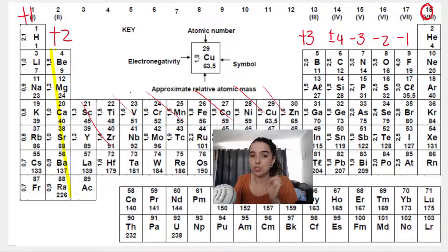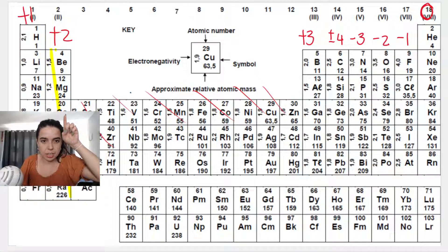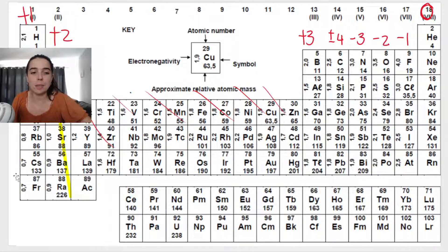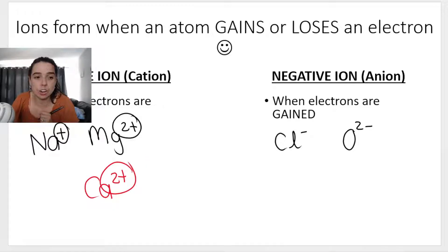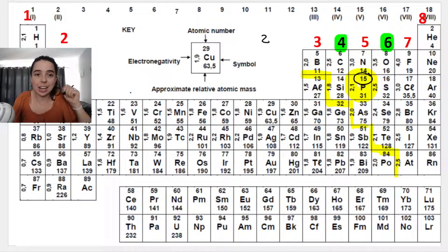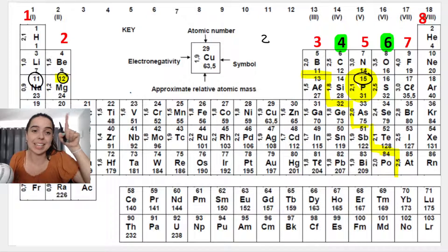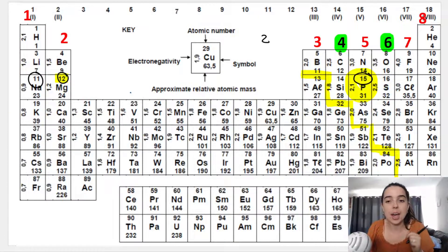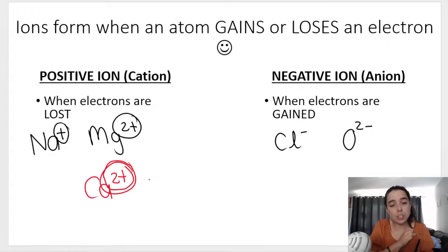For example, if I say draw the diagram for the calcium ion — calcium is in group two so it has a charge of plus two. The calcium ion is Ca²⁺, which means it has lost two electrons. The calcium atom has 20 electrons, but if it's the calcium ion with a 2+ charge, it has lost two electrons, so it now has 18 electrons.